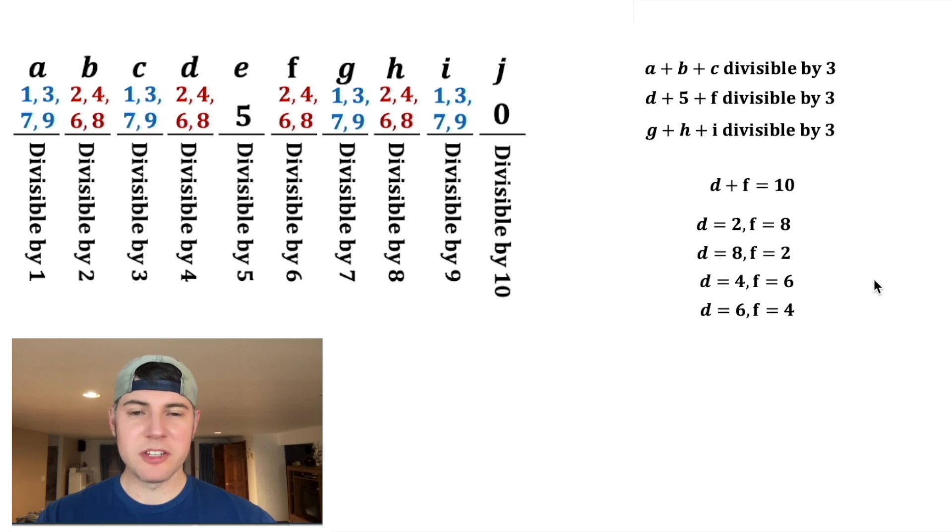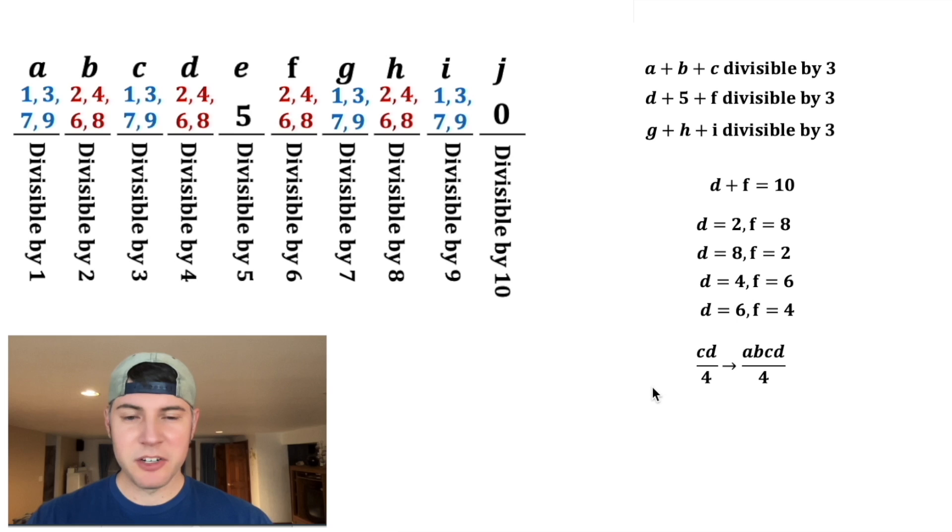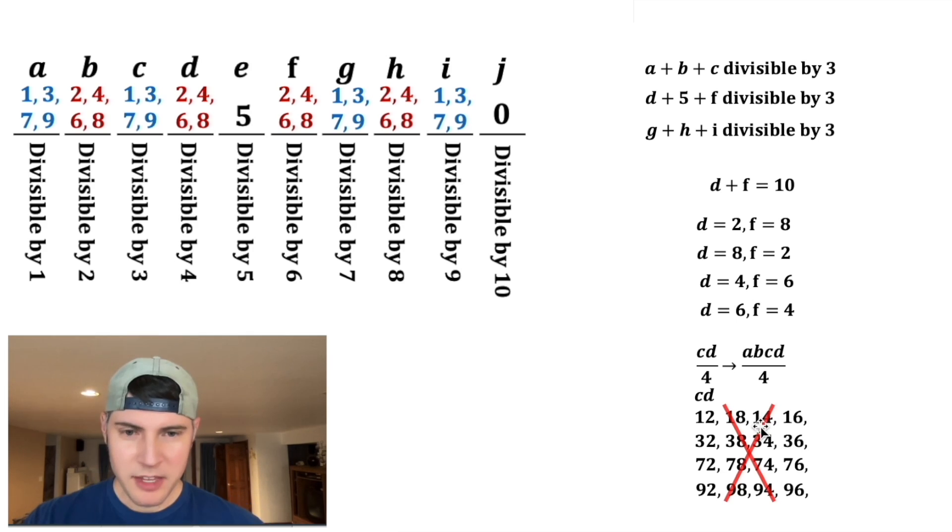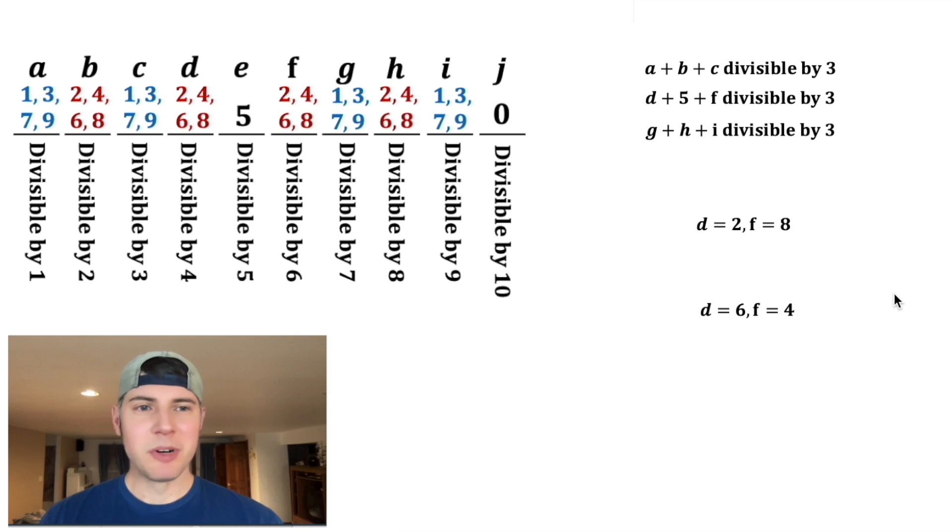Looking at D and F, these are the only scenarios that would give us 10. Next, let's look at A, B, C, D. We know that must be divisible by 4. For any number, if the last two digits are divisible by 4, that means that the whole number is going to be divisible by 4. So we can just focus on C, D. Only these outer ones are actually divisible by 4. And these are the situations where D is 8 or D is 4. So that gets rid of these two scenarios.